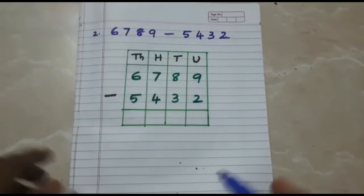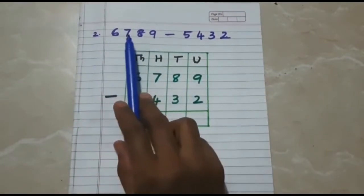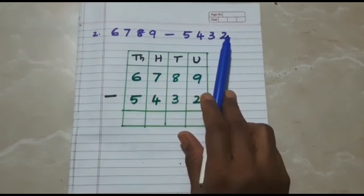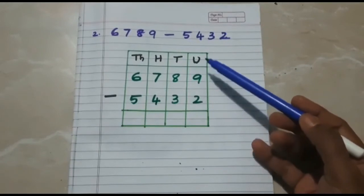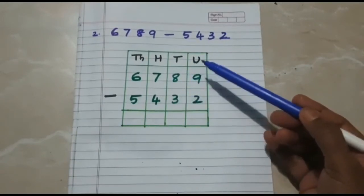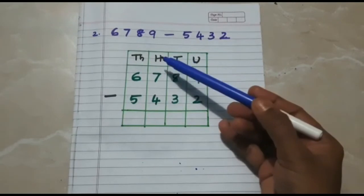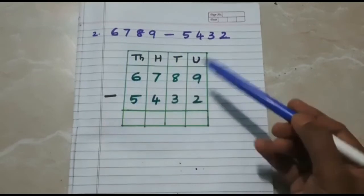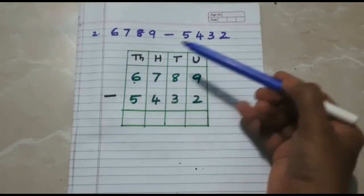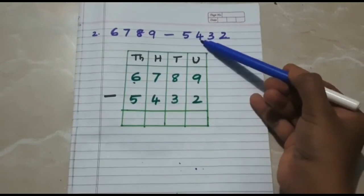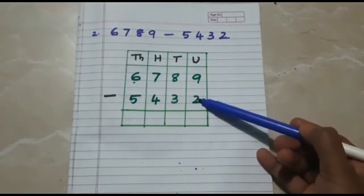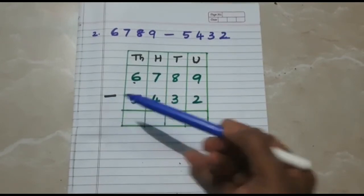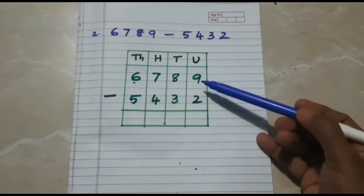Our next question is 6,789 minus 5,432. As usual, draw the columns with pencil and ruler. Write the place value starting from units, tens, hundreds, and thousands. For 6,789, write the digits in their correct place values. For 5,432, write the digits in their correct place value. Very important: you must write the sign of subtraction. Now let us begin the subtraction starting from units.